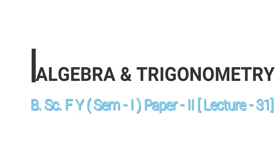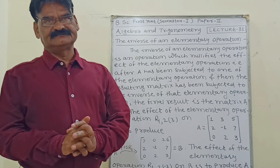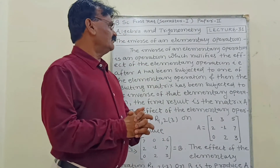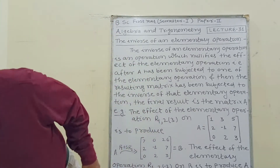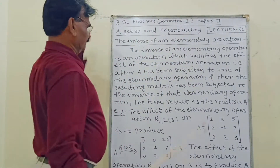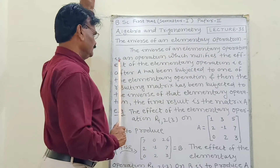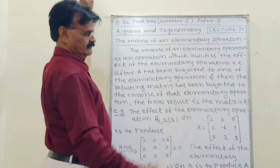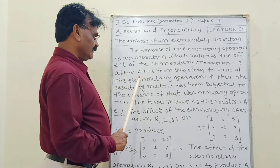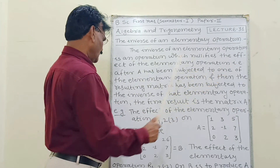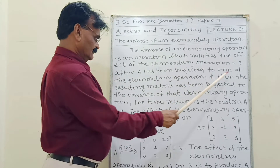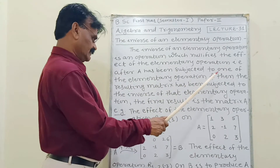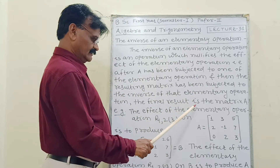Good afternoon friends. Algebra and Trigonometry, Lecture number 31: the inverse of an elementary operation. The inverse of an elementary operation is an operation which nullifies the effect of the elementary operation. That is, after A has been subjected to one of the elementary operations and then the resulting matrix has been subjected to the inverse of that elementary operation, the final result is the matrix A.